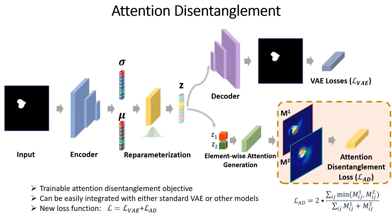Given a VAE for disentanglement learning, we propose a loss term, LAD, which takes two attention maps M1 and M2, each computed with element-wise attention as input. LAD is calculated to separate the high-response pixel regions in M1 and M2 as much as possible. The proposed LAD can be directly integrated with models for disentanglement training.